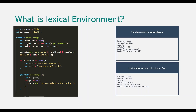The lexical environment only stores those variables and functions defined in the current scope, not in the current function. In the scope of the calculateAge function, three variables and the isFullAge function are defined. message1 is not in the scope of calculateAge — it is in the scope of the if block — and that's why it is not present in the lexical environment of calculateAge. But message2 is present here because it is declared using var, which has function scope, so message2 is defined in the scope of calculateAge.